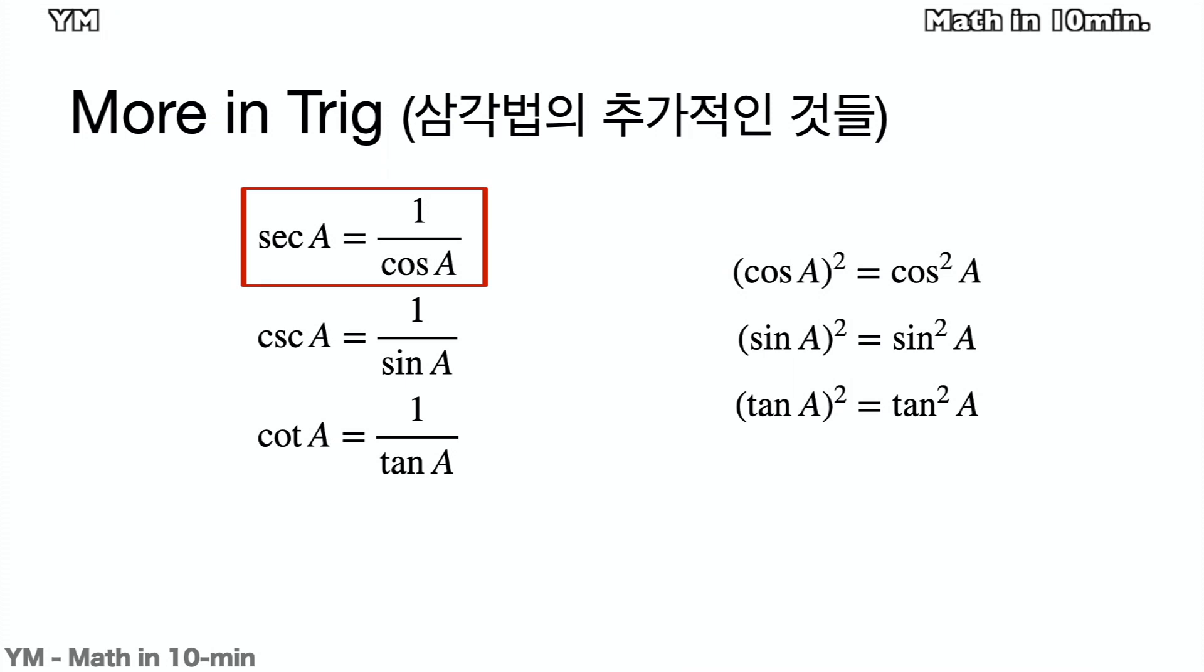Secant a is equal to 1 over cosine a. Cosecant a is equal to 1 over sine a. Cotangent a is equal to 1 over tangent a. For taking exponents to the trigs, we put the exponents onto the trig signs before the angle.